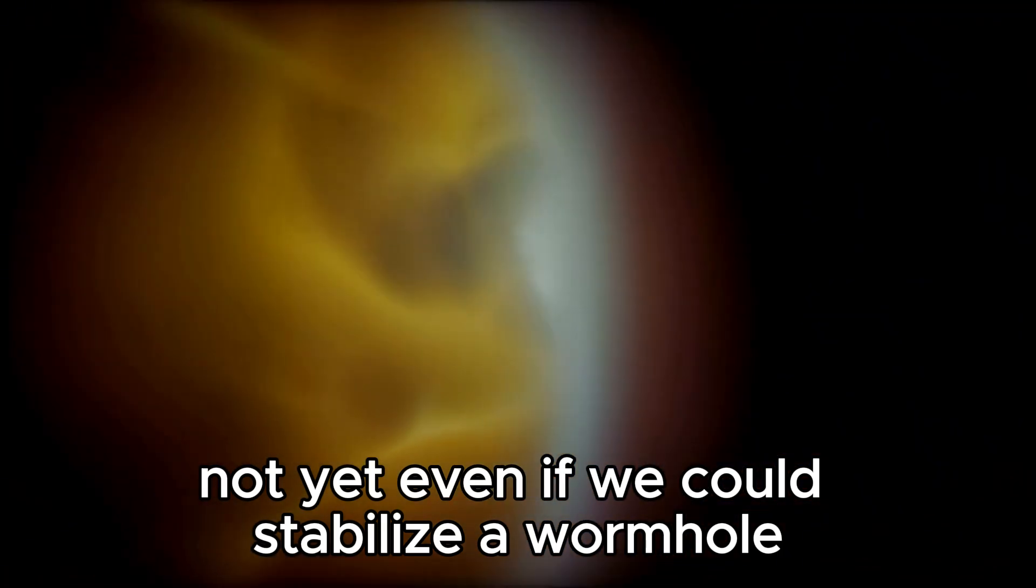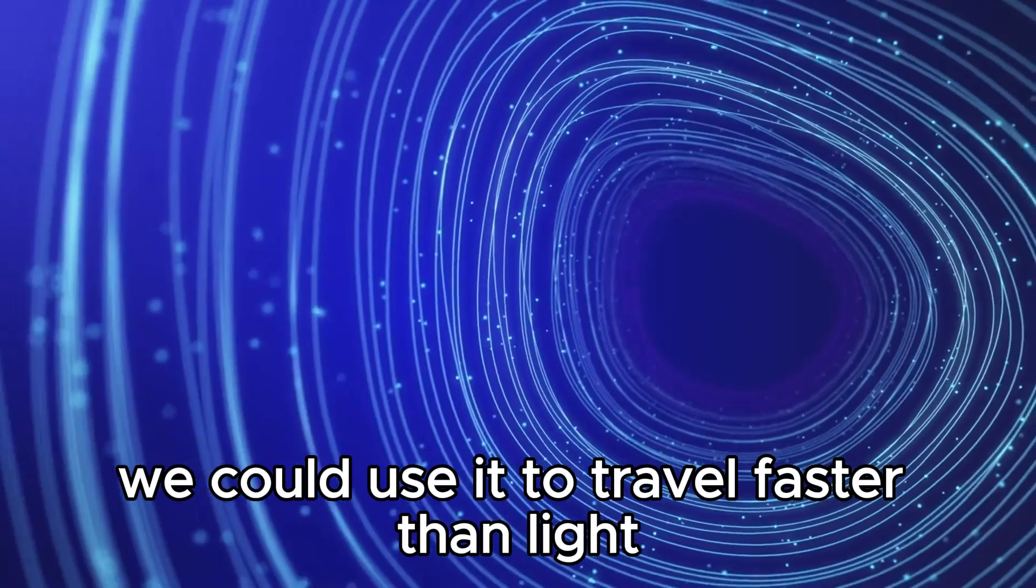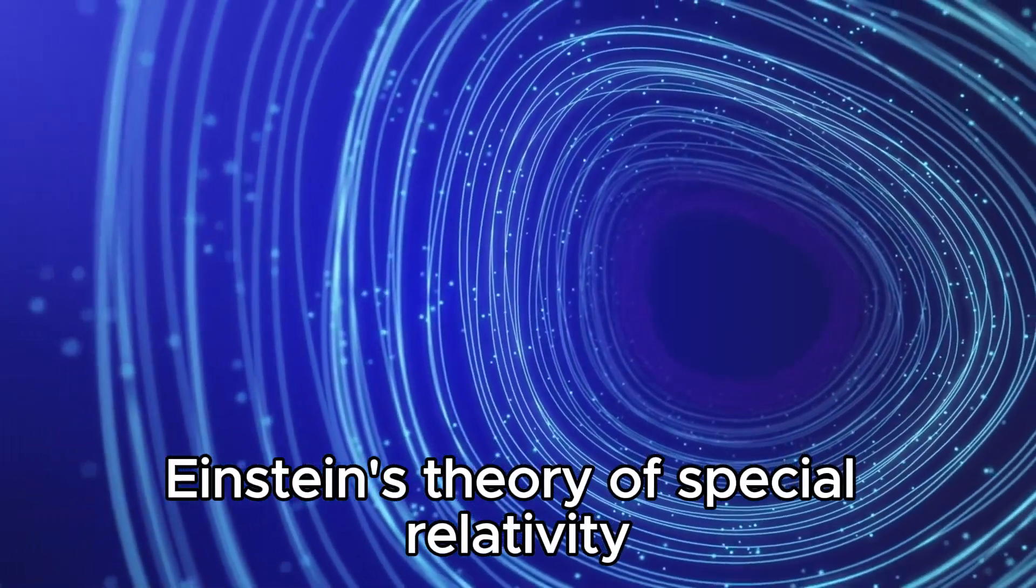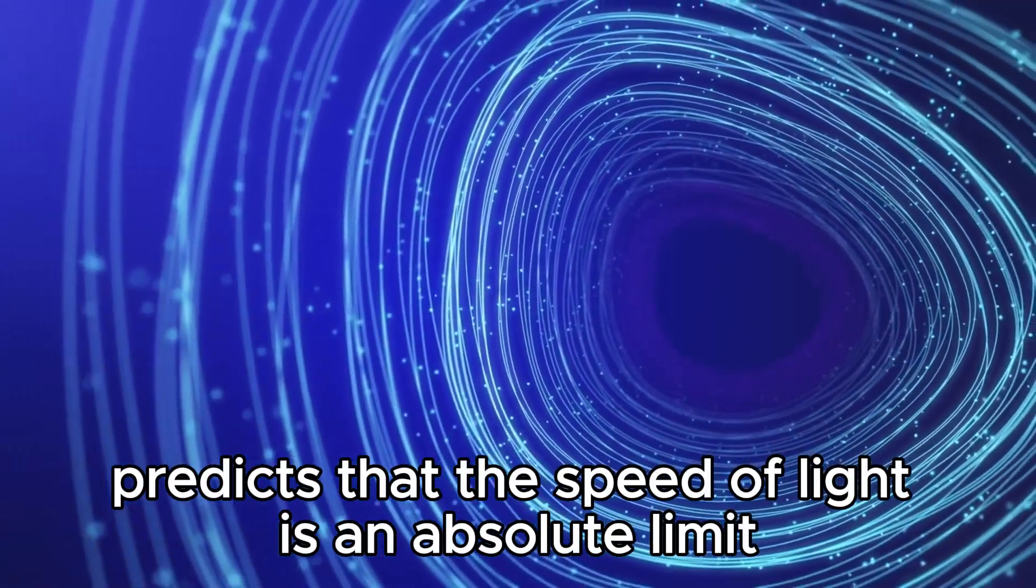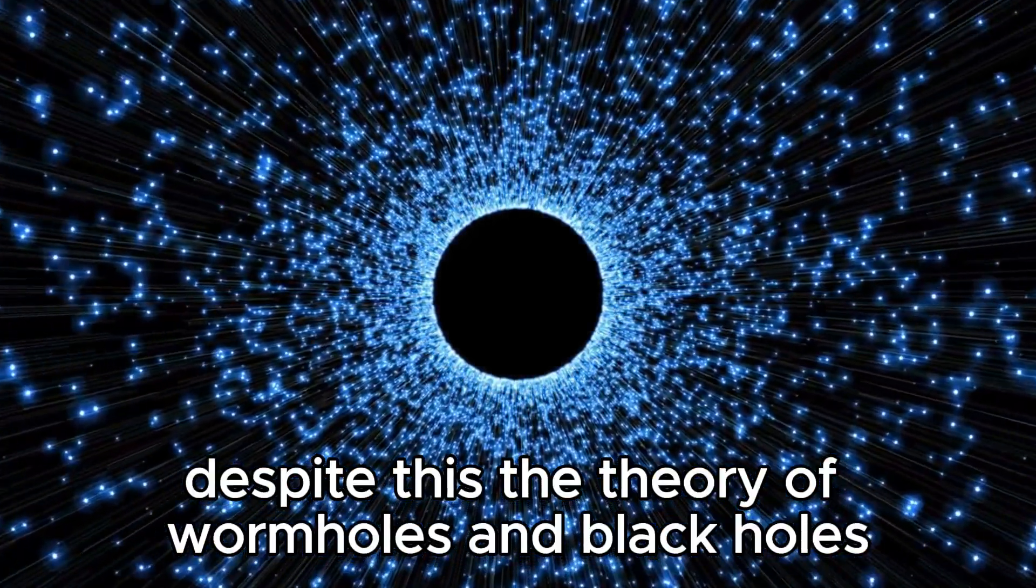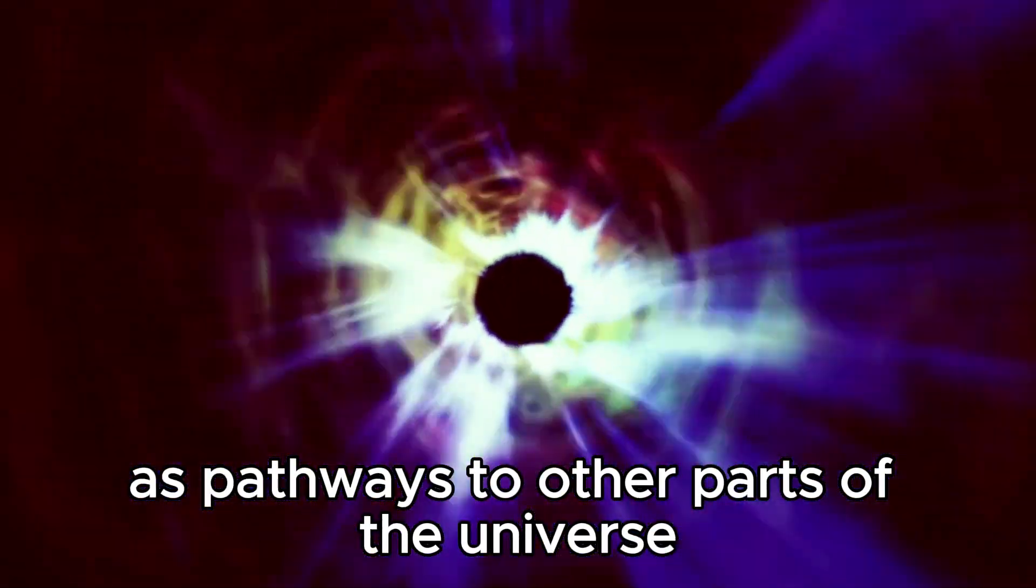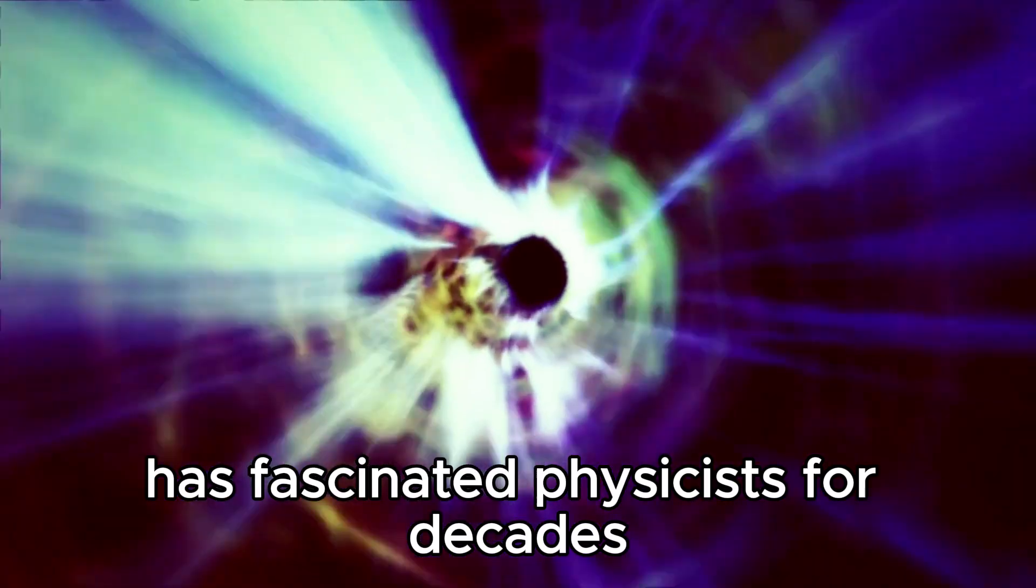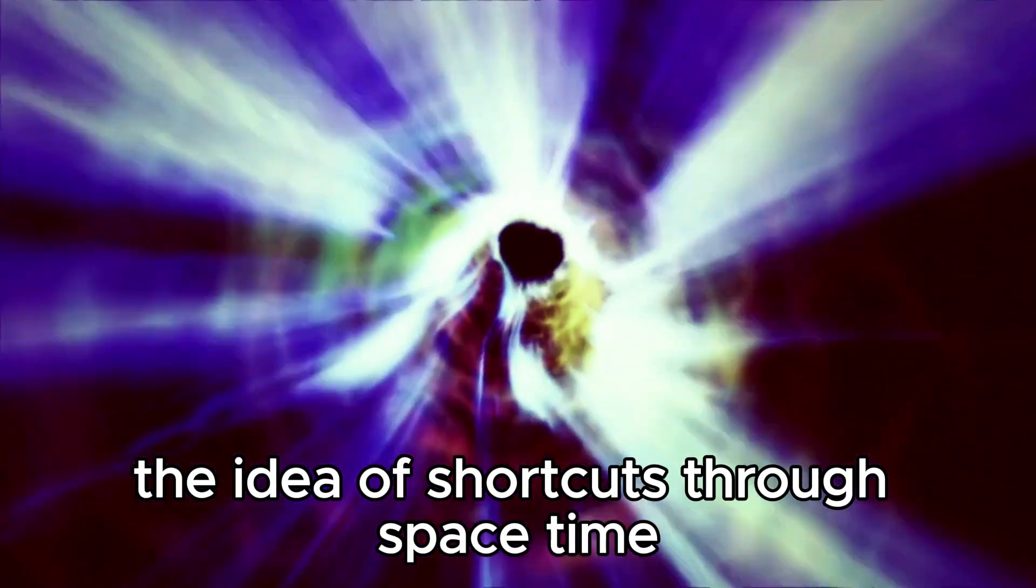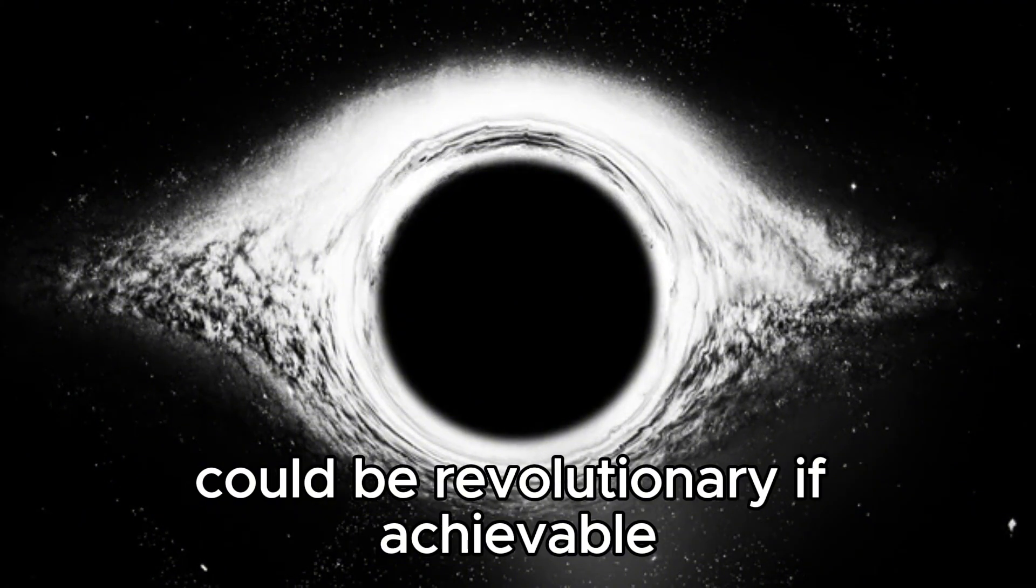Even if we could stabilize a wormhole, it is unlikely we could use it to travel faster than light. Einstein's theory of special relativity predicts that the speed of light is an absolute limit on how fast anything can travel through space-time. Despite this, the theory of wormholes and black holes as pathways to other parts of the universe or different times has fascinated physicists for decades.